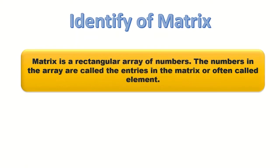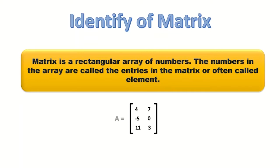Identity of matrix. Matrix is a written array of numbers. The numbers in the array are called the entries in the matrix, or often called elements. Matrix will have brackets on the sides. For example, we randomly put numbers 4, 7, minus 5, 0, 11, and 3. Matrices are named using capital letters — we can call this one matrix A.